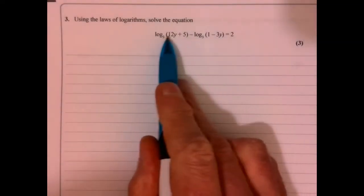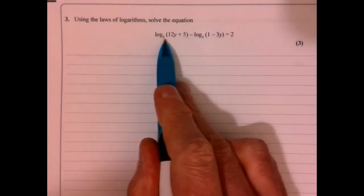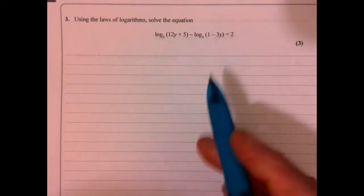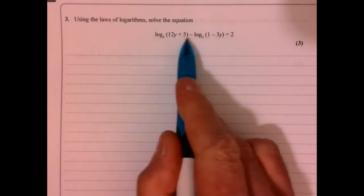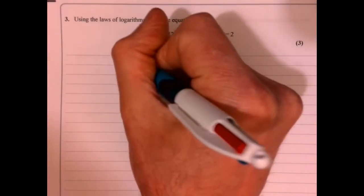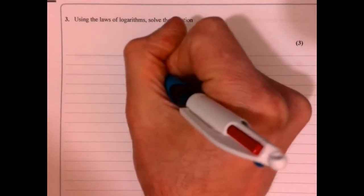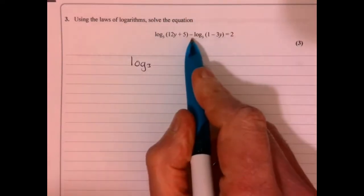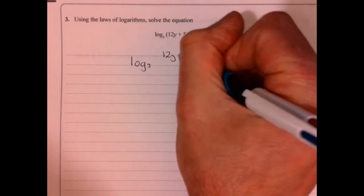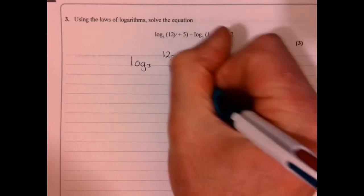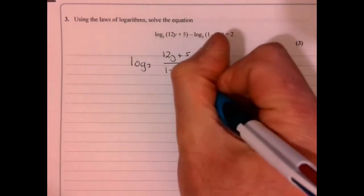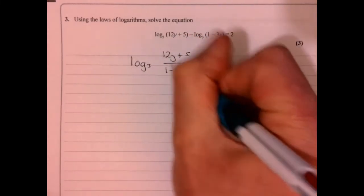Question 3. Log base 3 of something, take away log base 3 of something, equals 2. The first thing we're going to do is just combine these two things together. So we've still got log base 3 — now it's a takeaway. Remember what we can do is just use the basic log laws, minus 3y.